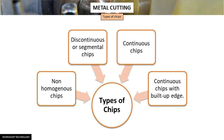The chips that are formed during metal cutting operations can be classified into four types: first, discontinuous or segmental chips; second, continuous chips; third, continuous chips with built-up edge; and fourth, non-homogeneous chips.